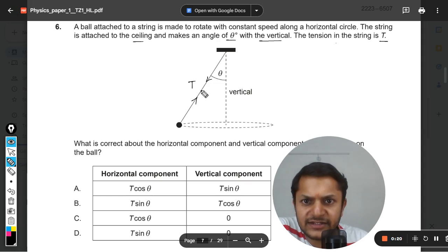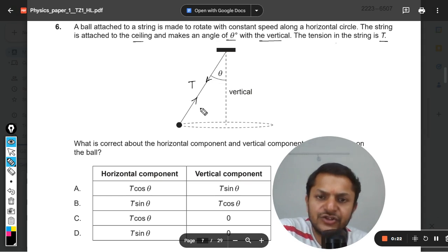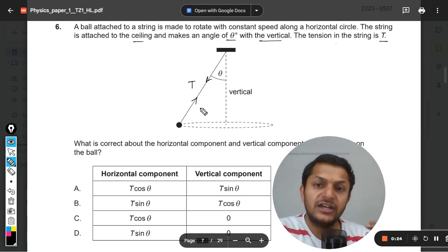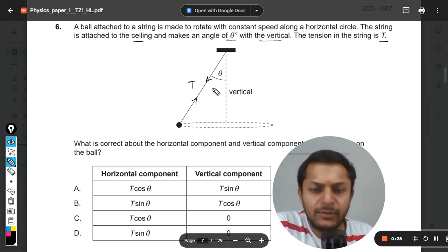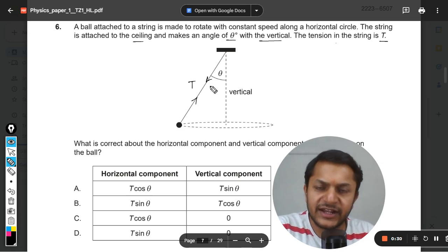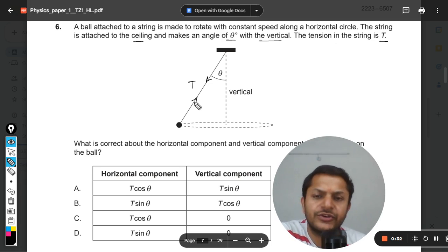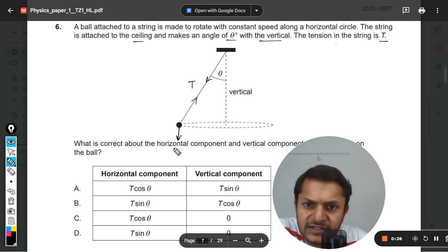This is the correct way of showing the tension because tension has two directions. The string is like this, so in IB books I have seen that this direction is not shown, but you can show these two directions. This is the T and this will be the weight W.